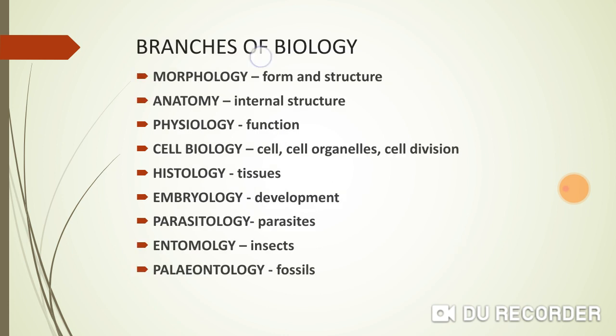Then come the branches of biology. There are actually more than sixty branches mentioned in different books. But let's look at what is in your textbook and remember the key words. Morphology is the study of form and structure.